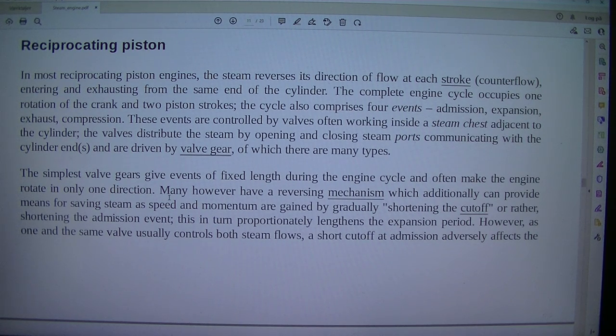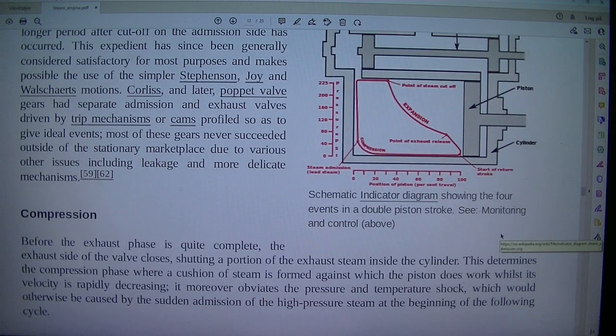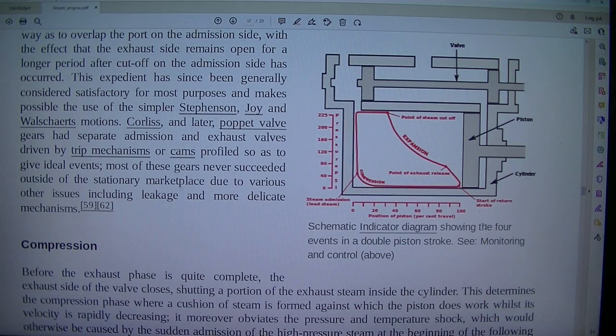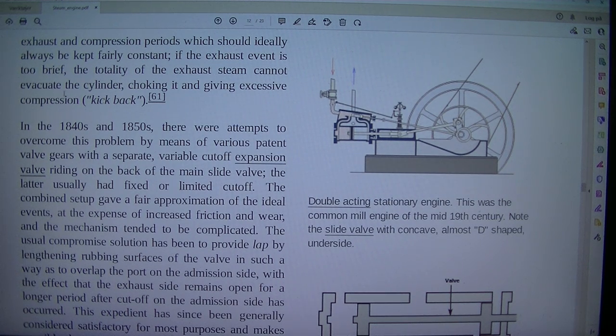Many, however, have a reversing mechanism which additionally can provide means for saving steam as speed and momentum are gained by gradually shortening the cutoff, or rather shortening the admission event. This is, and the same valve usually controls both steam flows. A short cutoff at admission adversely affects the double acting stationary engine. This was the common mill engine of the mid 19th century. Exhaust and compression periods, which should ideally be kept fairly constant. If the exhaust event is too brief, the totality of the exhaust steam cannot evacuate the cylinder, choking it and giving excessive compression, kickback.